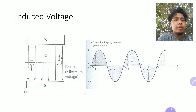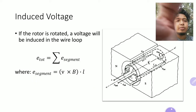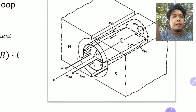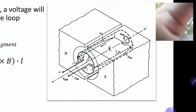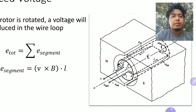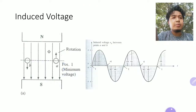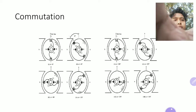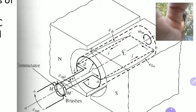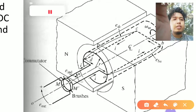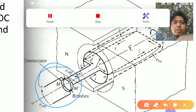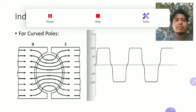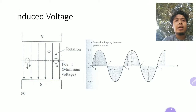Let me show you the diagram we used before. I want you to take a mental note of this picture, and once you've done that I'll proceed to commutation. The difference between that image and this image is that you now have this sort of mechanism here.